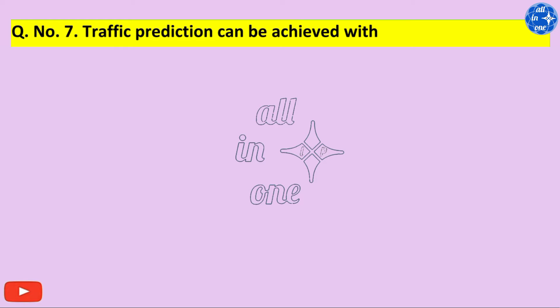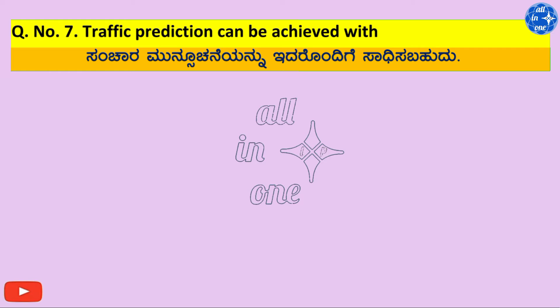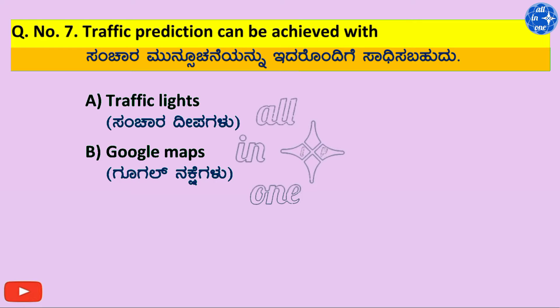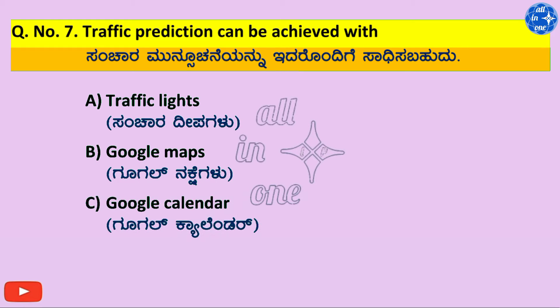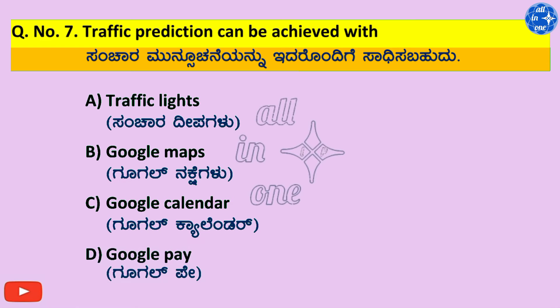Q7. Traffic prediction can be achieved with: A. Traffic Lights, B. Google Maps, C. Google Calendar, D. Google Pay. Right answer is B. Google Maps.